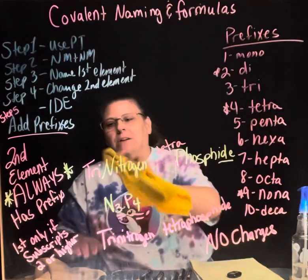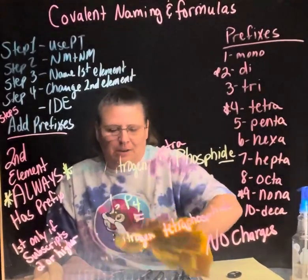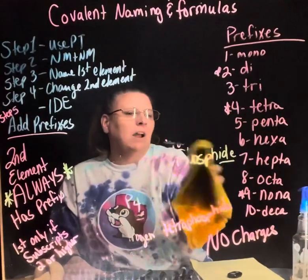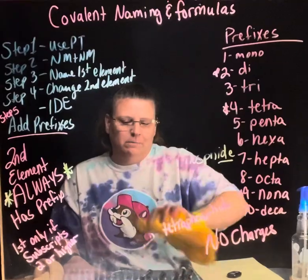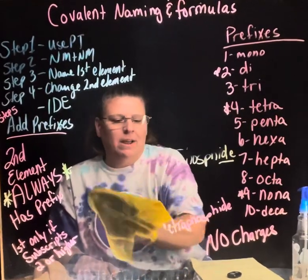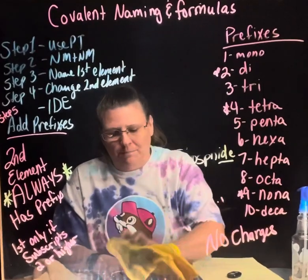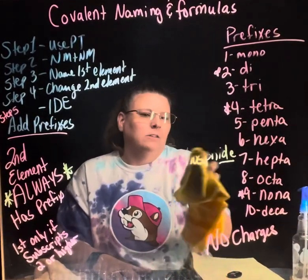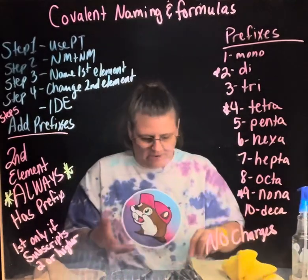Hopefully that seems pretty easy, especially after ionic naming where we had polyatomic ions, cations, anions, and had to swap and balance charges. Here there are no charges to balance. All you do is take your subscript and make it a prefix.